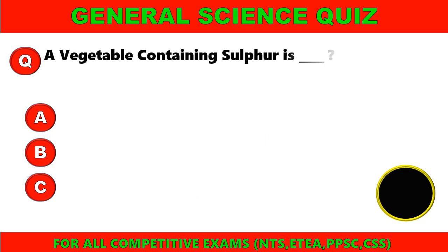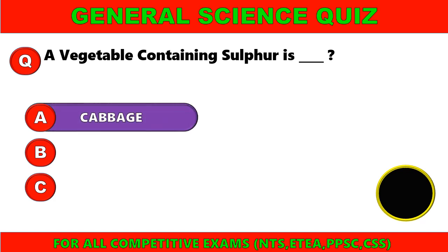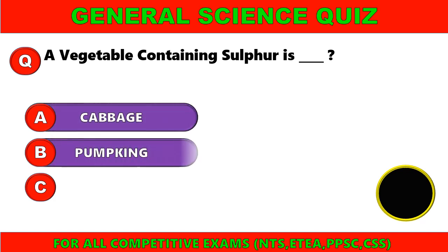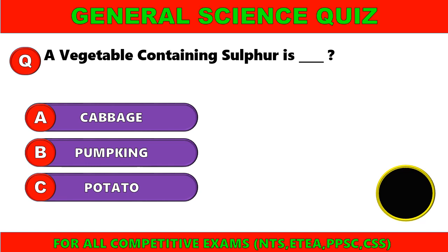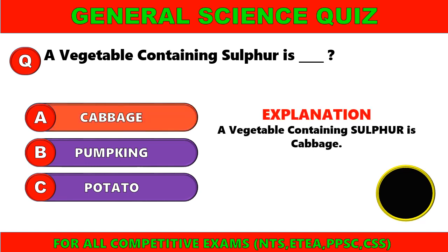A vegetable containing sulfur is: A. Cabbage, B. Pumpkin, C. Potatoes. The right option is A. Cabbage. A vegetable containing sulfur is Cabbage.